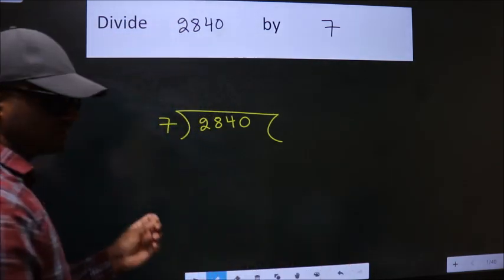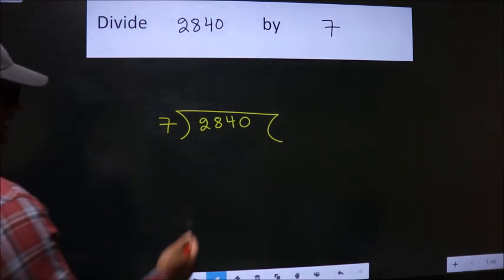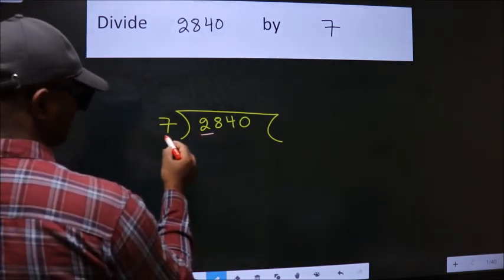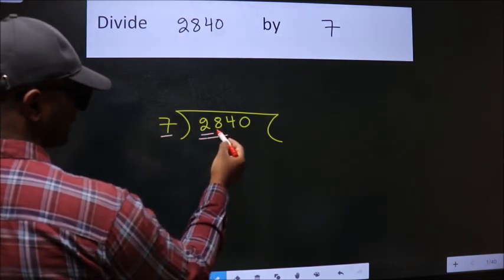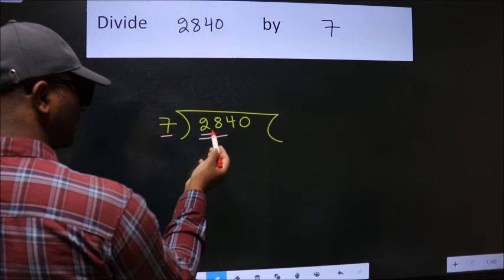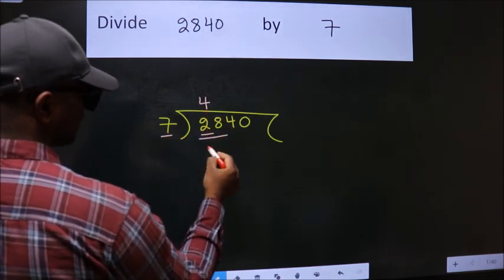This is your step 1. Next, here we have 2. Here 7. 2 is smaller than 7, so we should take 2 numbers: 28. When do we get 28 in the 7 table? 7 fours 28.